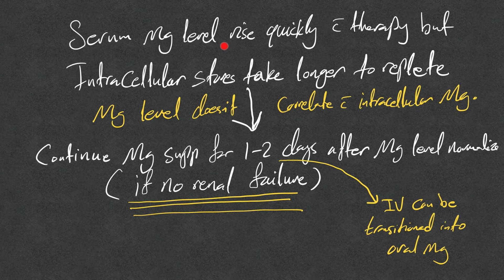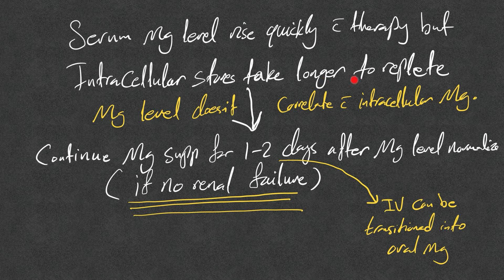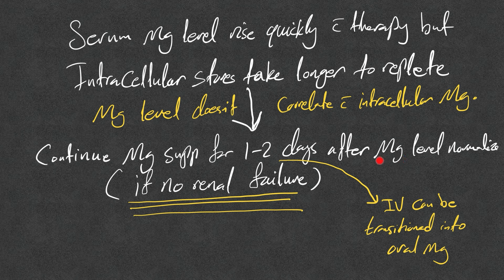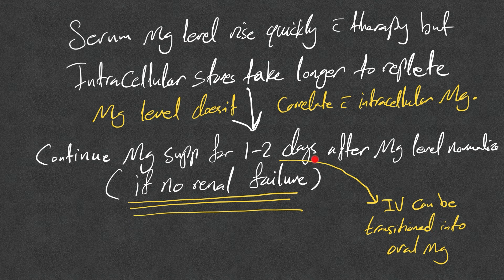Very important: serum magnesium level rises quickly with therapy, but the intracellular stores take longer to replete. That's why magnesium level does not correlate with intracellular magnesium. For that reason, continue magnesium supplements for 1 to 2 days after magnesium level normalizes if no renal failure and as long as hypermagnesemia does not develop. The IV magnesium can be given initially, then transition into oral for this once the magnesium level normalizes for the next 1 to 2 days.